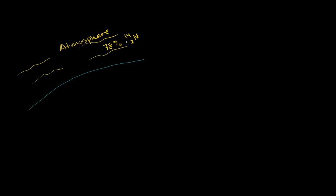We talk about the word isotope in the chemistry playlist. An isotope — the protons define what element it is, but the mass number up here can change depending on the number of neutrons you have. The different versions of a given element are each called isotopes. I just view them as versions of an element.